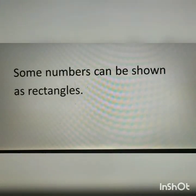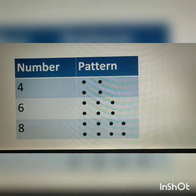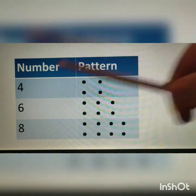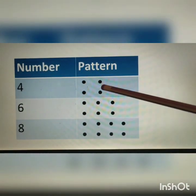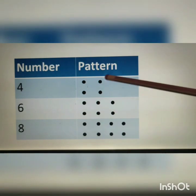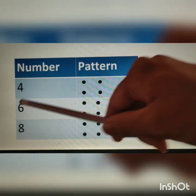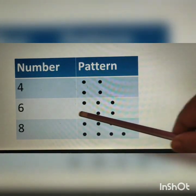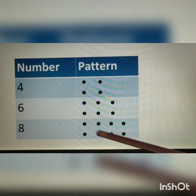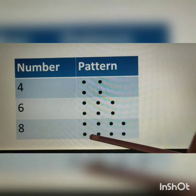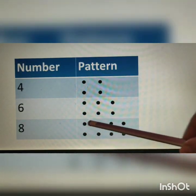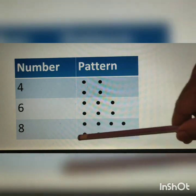Some numbers can be shown as rectangles. Examples of numbers that form rectangles: number 4 uses 4 dots arranged as a rectangle — 1, 2, 3, 4 in two rows. Next, 6 dots are used to represent a rectangle, and 8 dots are used to represent the next rectangle.